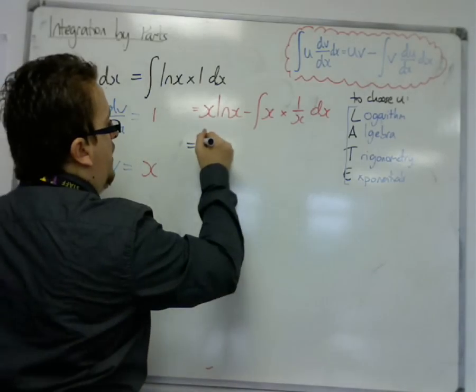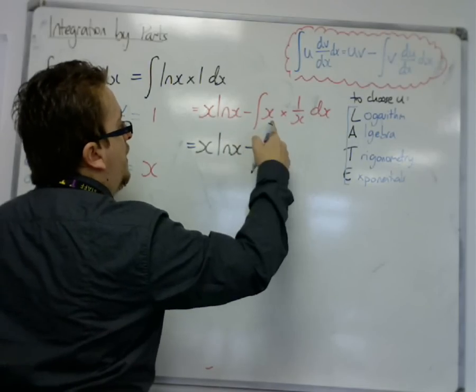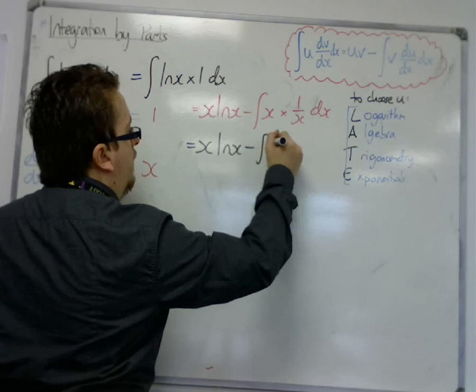Now let's do a little bit of tidying there, because this x times 1 over x doesn't look very nice, because they multiply together just to make 1. So I have 1 dx.